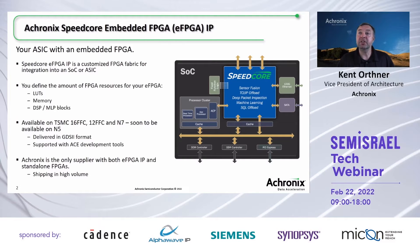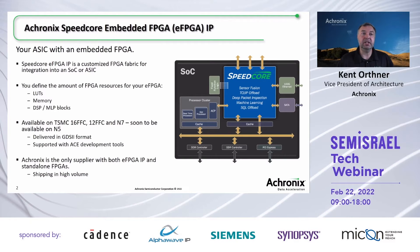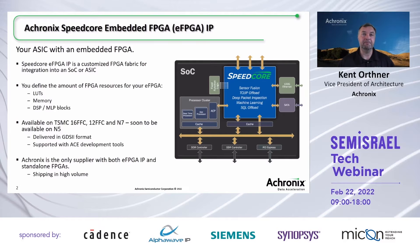Currently, with our SpeedCore embedded FPGAs, we have them available on TSMC 16, 12, and 7 nanometer processes, and soon they're going to be available in 5. They'll be delivered in GDS2 format and supported by our ACE development tools. Achronix is the only supplier with both embedded FPGA and standalone FPGAs, both of which are shipping in high volume.